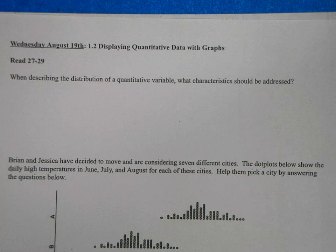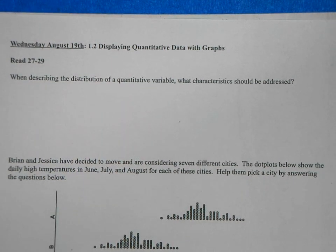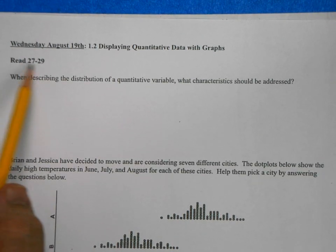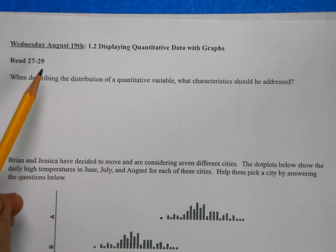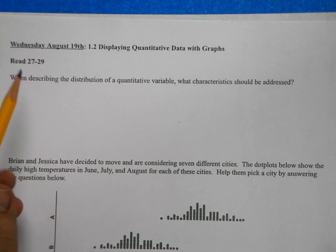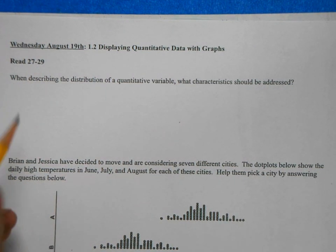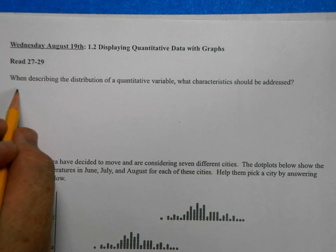All right, so when describing the distribution of quantitative variables, we're on page 27 to 29. My suggestion is that you kind of walk through it with us in the book as we talk about it or read the book ahead of time. So there's an acronym, it's called SOCS.